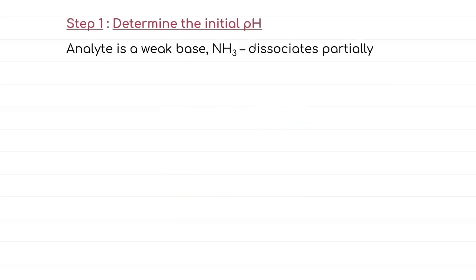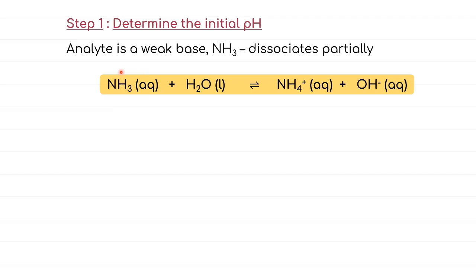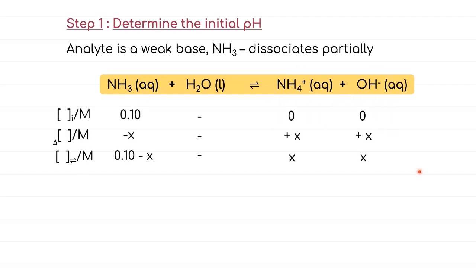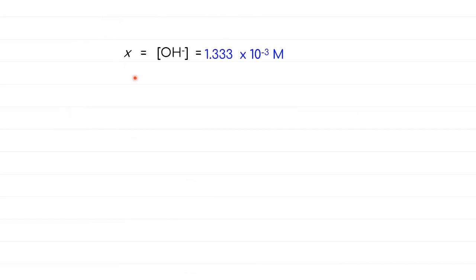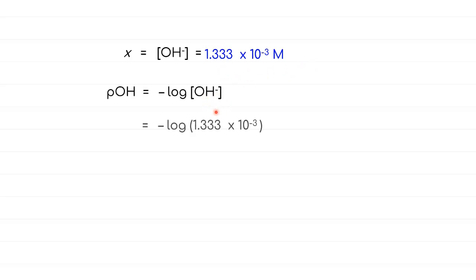To determine the initial pH of NH₃, we write the dissociation of NH₃, which undergoes partial dissociation in water because it is a weak base, forming NH₄⁺ and OH⁻. Using an ICE table and substituting the Kb value, solving for x gives two values — we take only the positive one: x = 1.333 × 10⁻³. Since x equals [OH⁻], we get [OH⁻] = 1.333 × 10⁻³ M, then pOH = 2.88, and pH = 14 − 2.88 = 11.12.